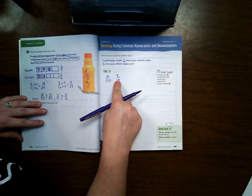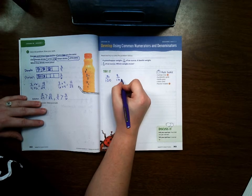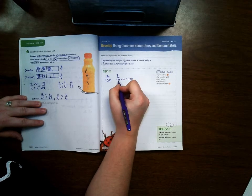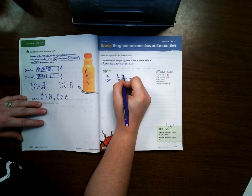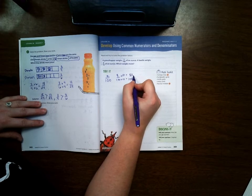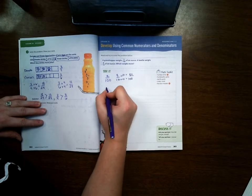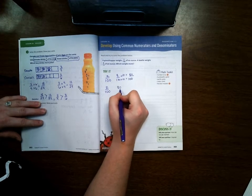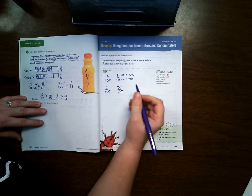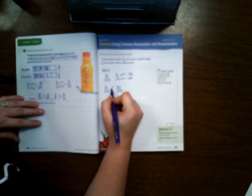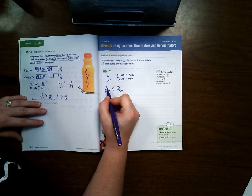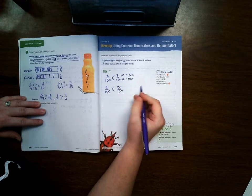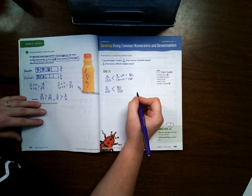So I should know that 10 times 10 equals 100, and whatever I do to the bottom I also do to the top, so that means it would be 80/100. Now I can compare 2/100 to 80/100. And when I have them like this I can easily see that 80/100 is much bigger than 2/100. So that also means that 8/10 is bigger than 2/100.